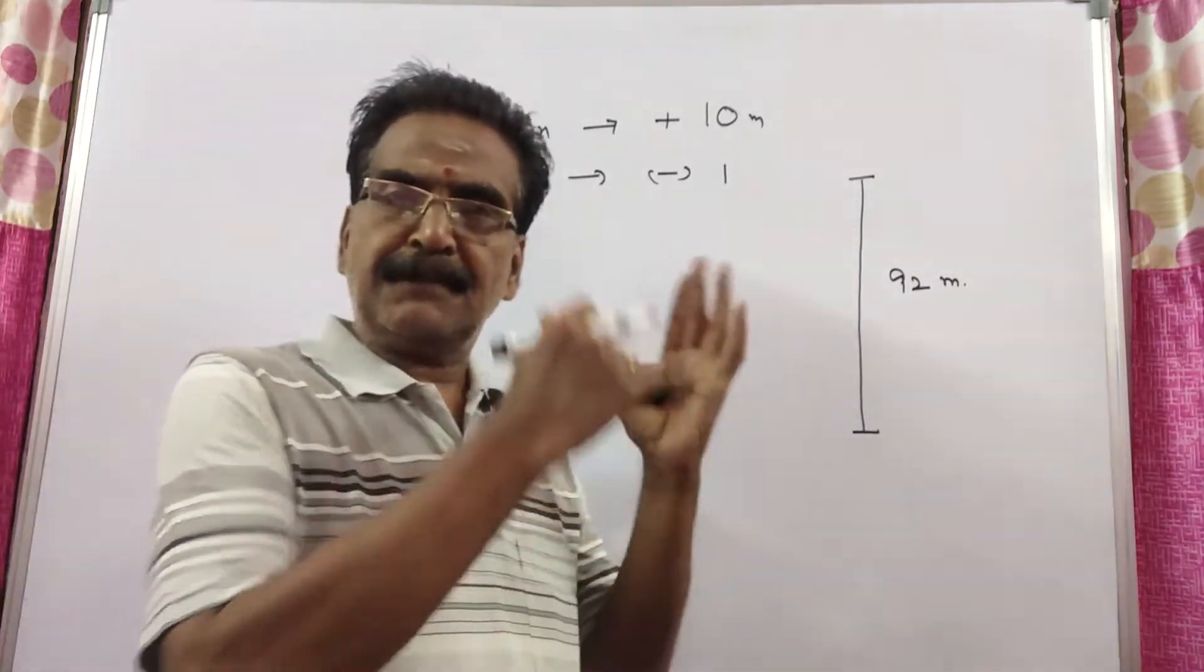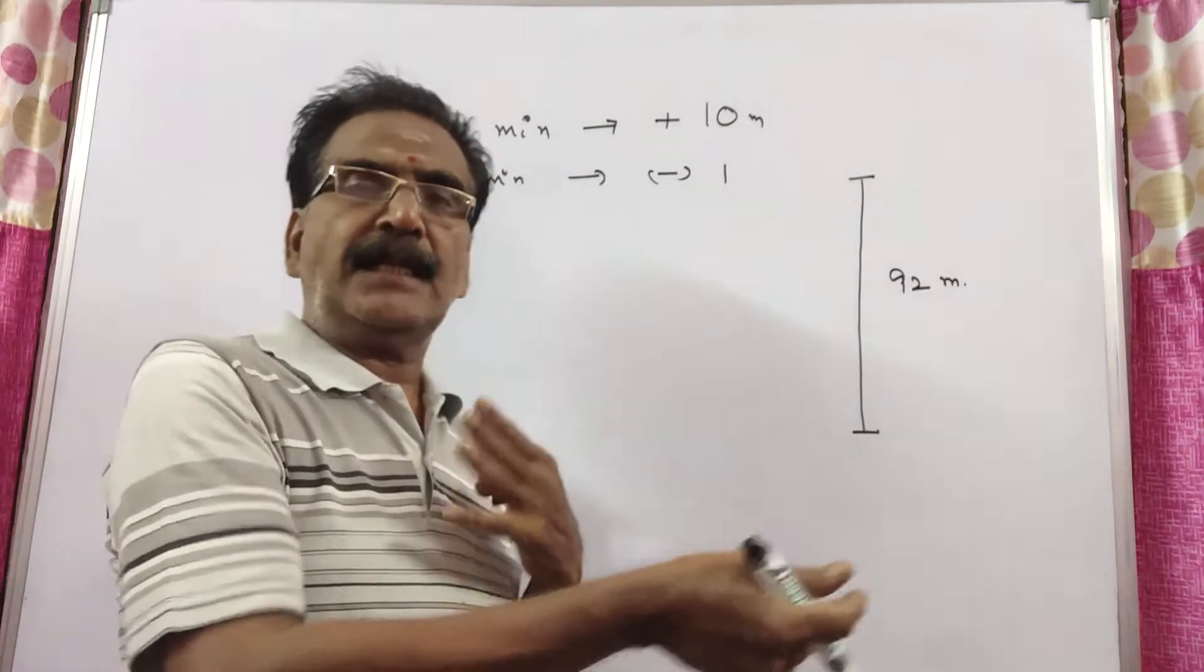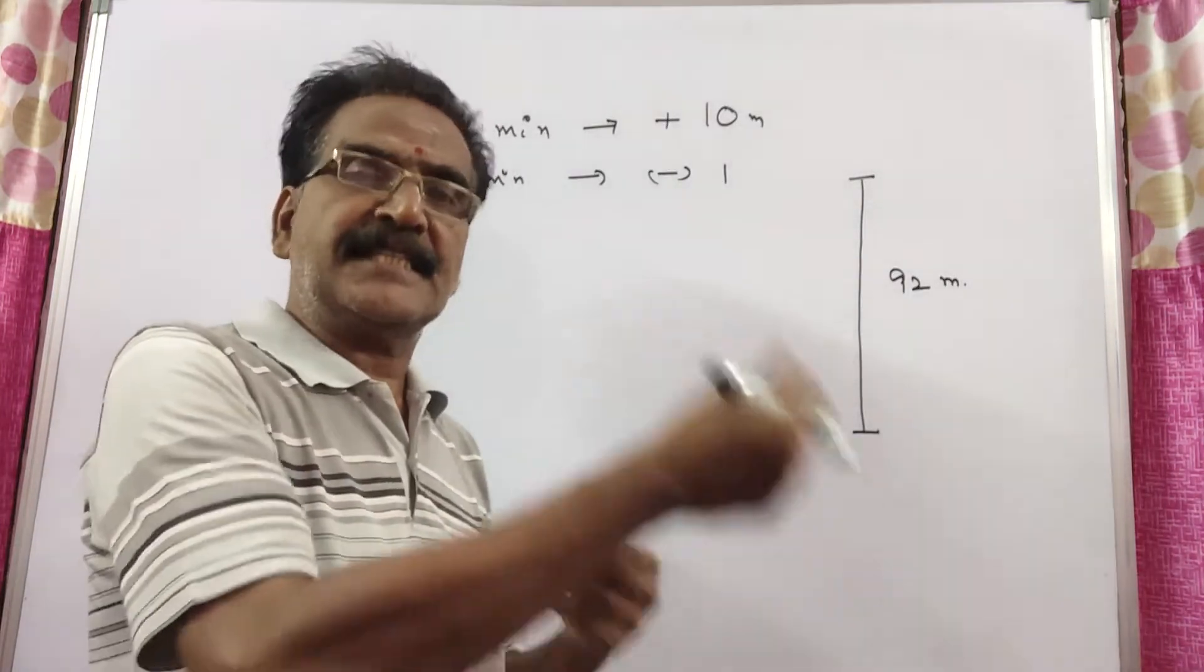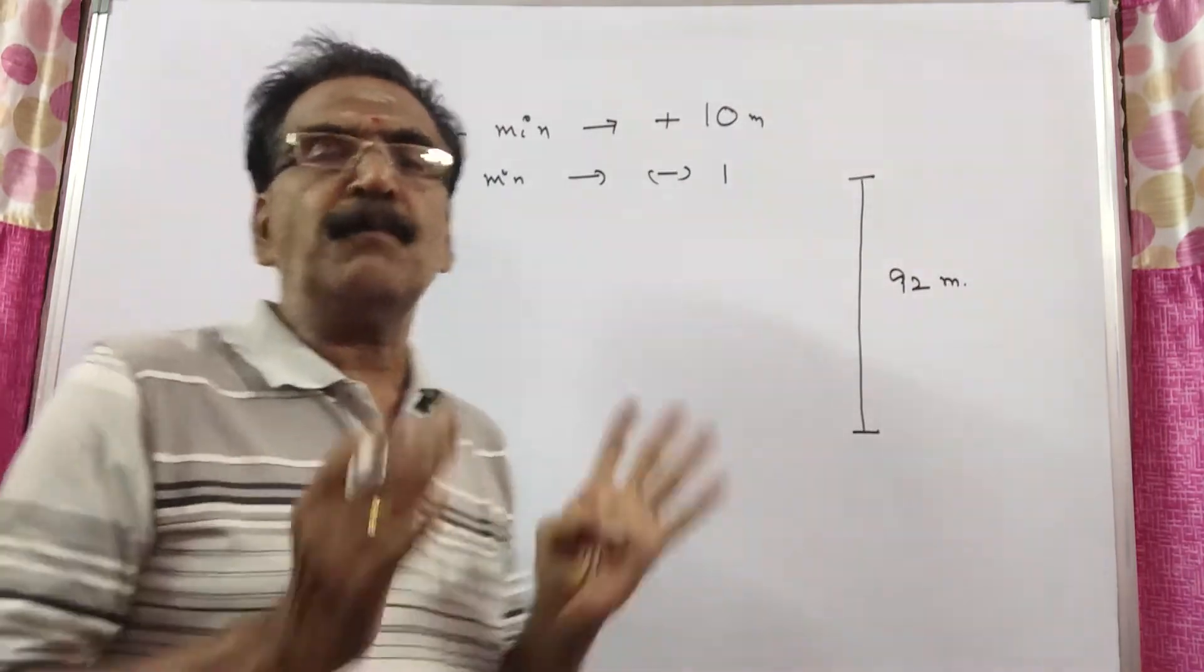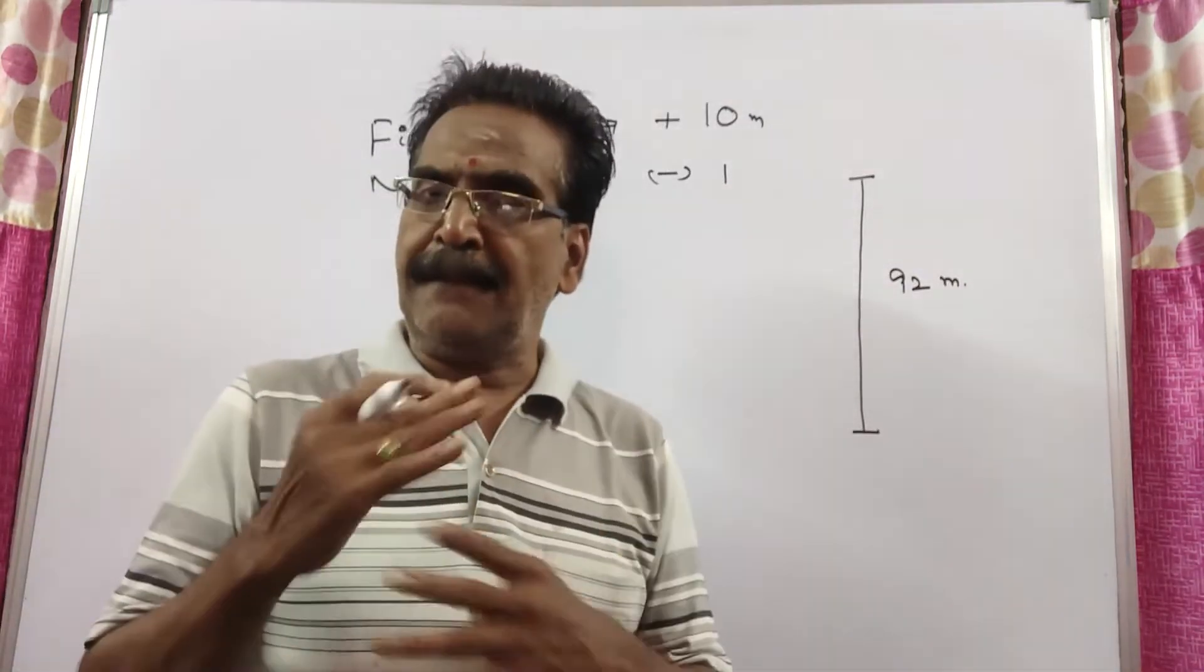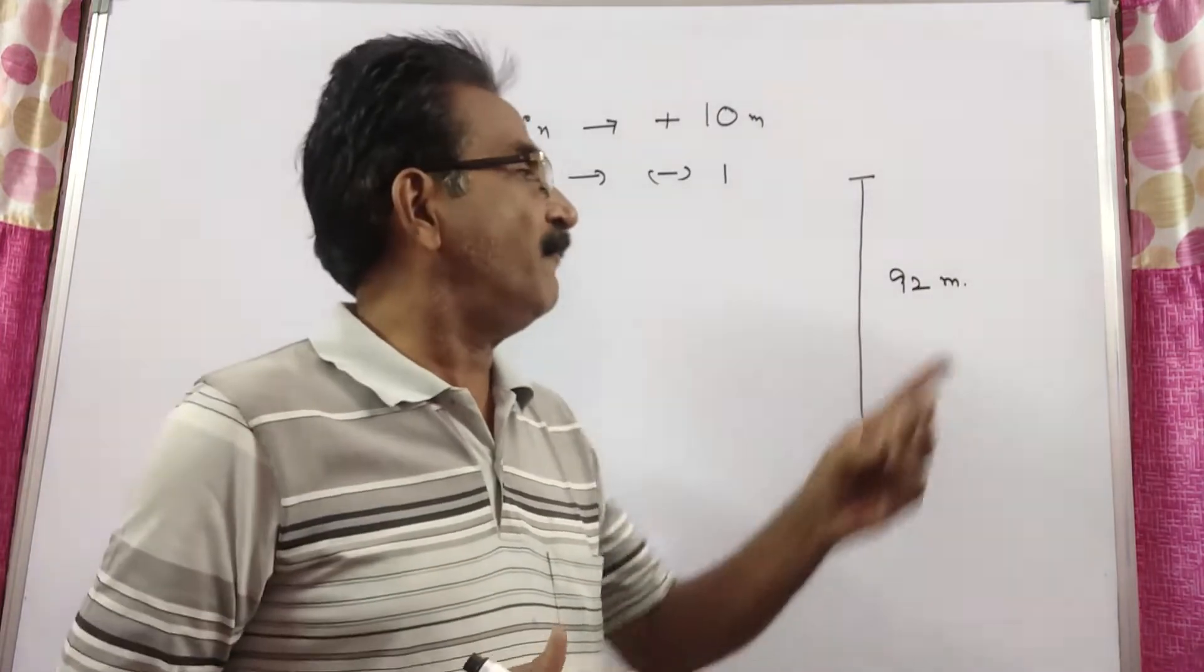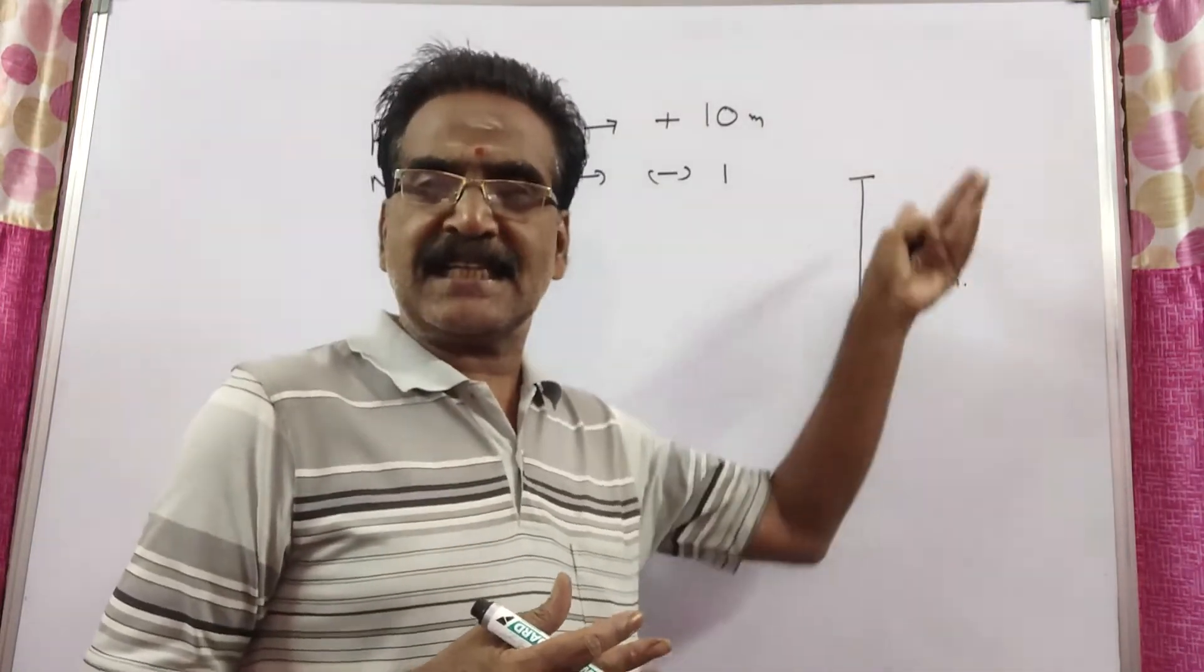In the first minute, it climbs up 10 meters and in the next minute, that is in the second minute, it slips down 1 meter. How much time will it take to climb up a pole of 92 meters high?